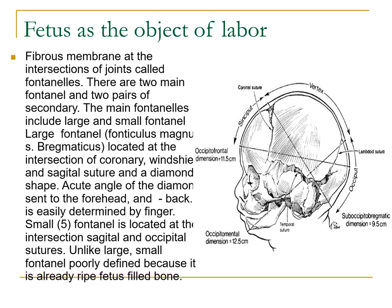Your fibrous membranes at the intersections of joints are called fontanels. There are two main fontanels and two pairs of secondary. The main fontanels include the large and small fontanel. The large fontanel is located at the intersection of the coronal, frontal, and sagittal sutures, and is diamond-shaped — the acute angle of the diamond faces the forehead and is easily determined by fingers. The small fontanel is located at the intersection of the sagittal and occipital sutures. Unlike the large fontanel, it is poorly defined because it is already filled with bone in the term fetus.